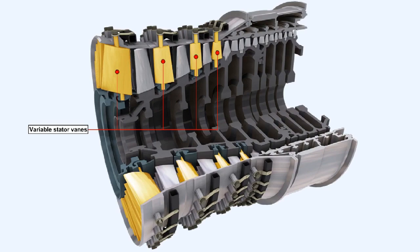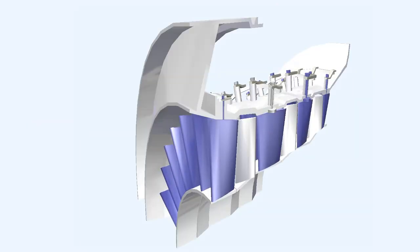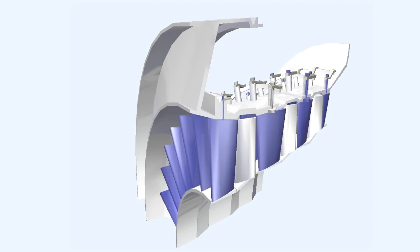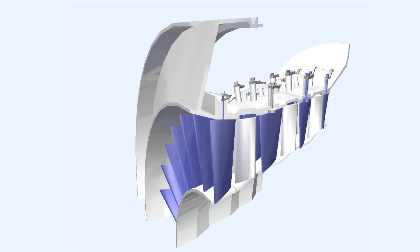After the first rotor stage has been successfully negotiated, the airflow may still have problems further down the compressor when the engine is operating at other than its optimum conditions. To minimize those problems, some engines are fitted with variable stator vanes. Variable stator vanes can be pivoted automatically so that as the compressor speed is reduced from the optimum design value, they are progressively closed to maintain the airflow onto the following rotor blades at an acceptable angle of attack.